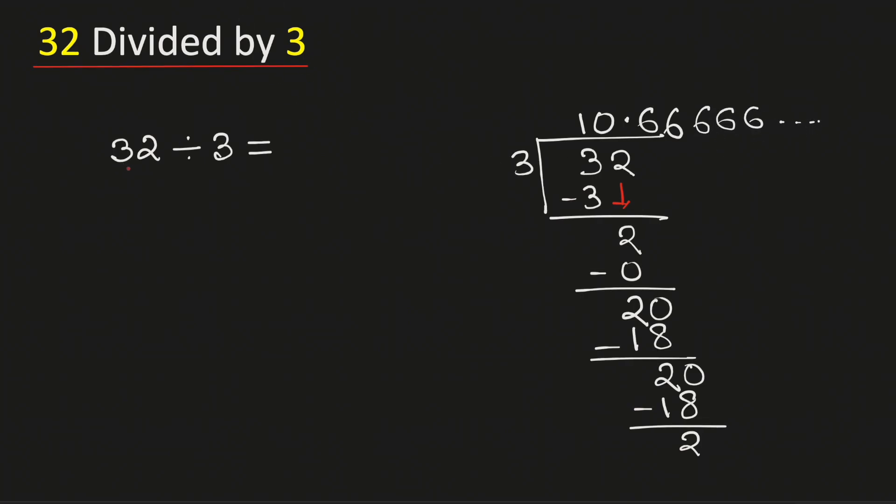Therefore, 32 divided by 3 will be equal to 10.66. This is the approximated value of 32 divided by 3, and this is our final answer.